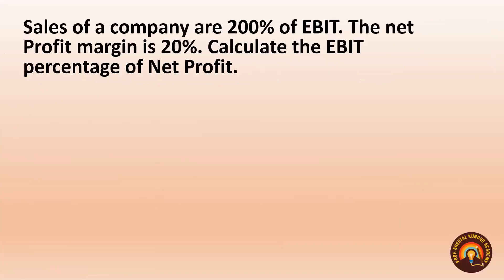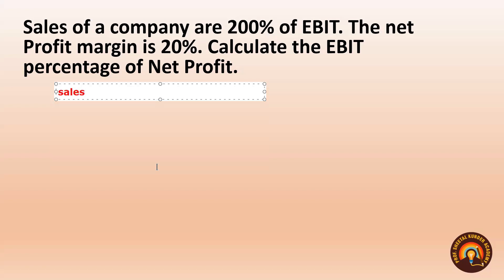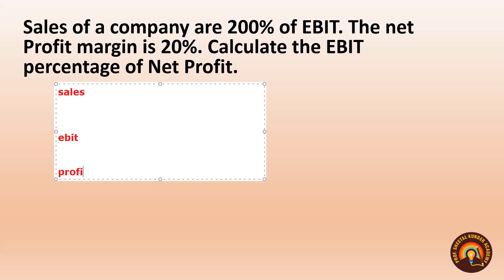Next question: Sales of a company are 200% of EBIT. The net profit margin is 20%. Calculate the EBIT percentage of net profit. Let's place these vertically as they appear in the revenue statement — Sales, EBIT, then Profit. If EBIT = 100, then Sales = 200% of EBIT = 200. Net profit margin is 20% of sales, so if sales = 100, net profit = 20, and EBIT = 50 (since EBIT was 100 when sales was 200, so EBIT = 50 when sales = 100).